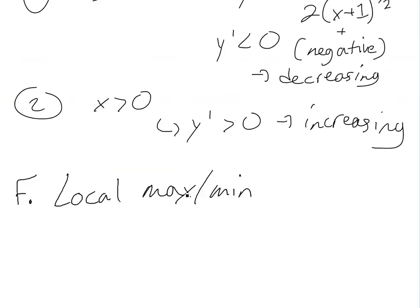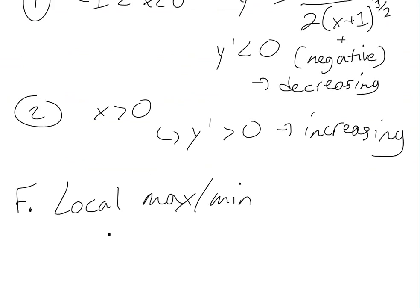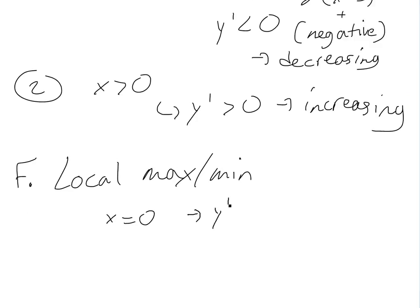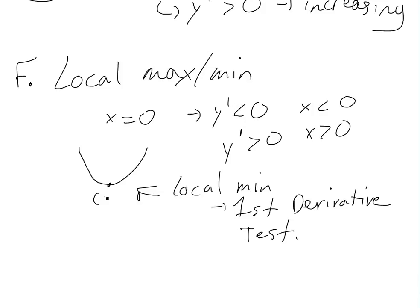For part F — local max and minimum — at the critical point x equals zero, y prime changes from negative (decreasing) to positive (increasing). By the first derivative test, this is a local minimum. The value is at (0, 0), which is also where our intercept is.